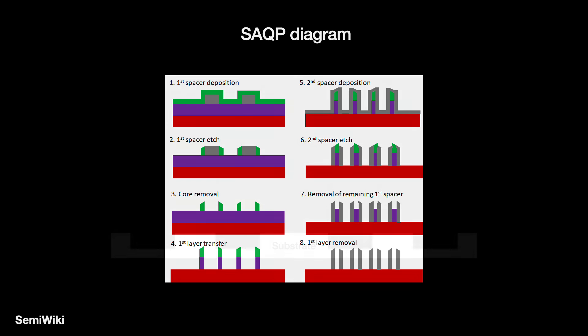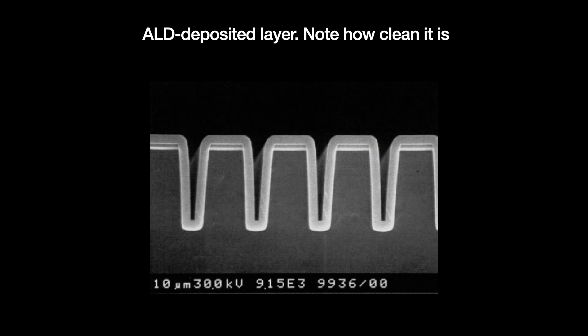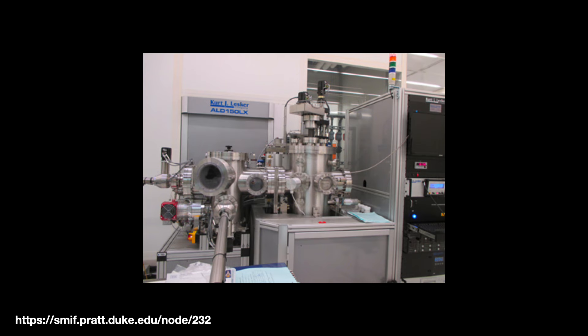Self-aligned quadruple-patterning is SADP done twice. Plasma-assisted ALD was ideal for this because you had to deposit a uniformly thin layer that closely hugged the pattern's turns and corners. And since it worked at low temperatures below 100 degrees Celsius, it posed less deformation risk for the thin layers.